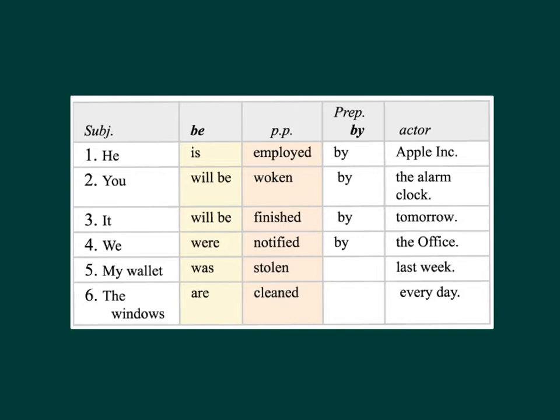Look at some examples in passive voice sentences. Can you tell what tenses they are? Number one: he is employed by the Apple Incorporation — it is simple present tense. Number two: you will be woken by the alarm clock — it is simple future tense. Number three: it will be finished by tomorrow — it is simple future tense.